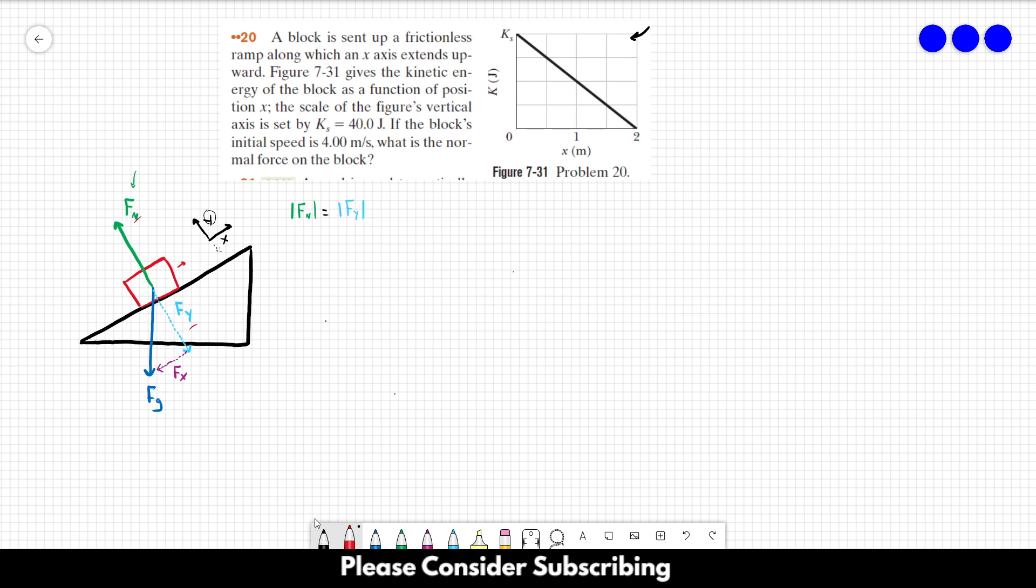So if we take a look at this triangle over here, using the Pythagorean theorem, we can find that the Fy squared plus Fx squared is equal to Fg squared. We already know that Fy is equal to Fn. So since it's squared over here, it doesn't matter if it's positive or negative.